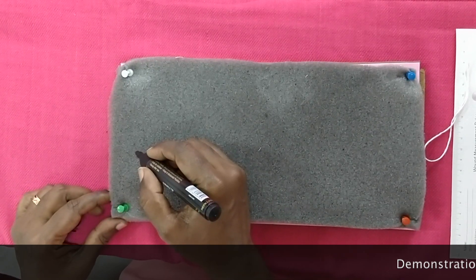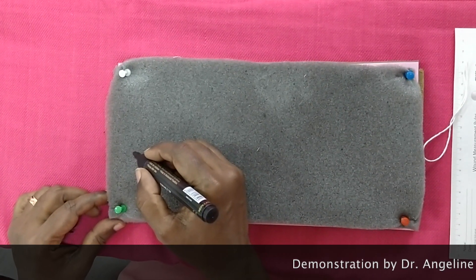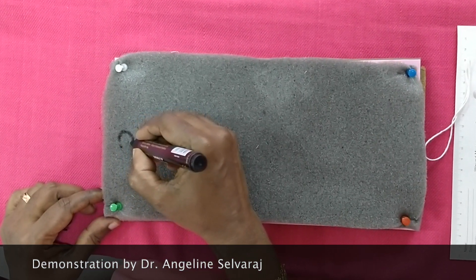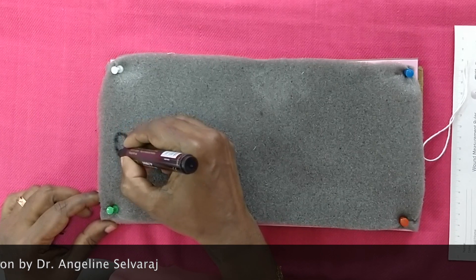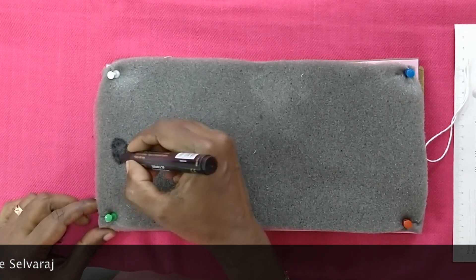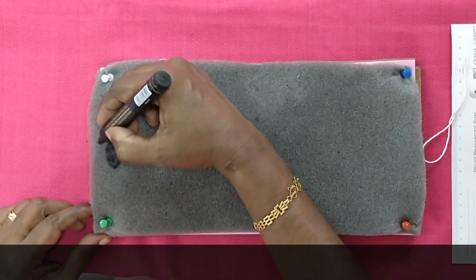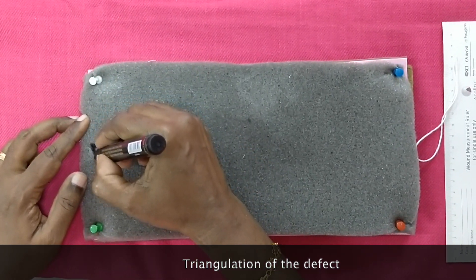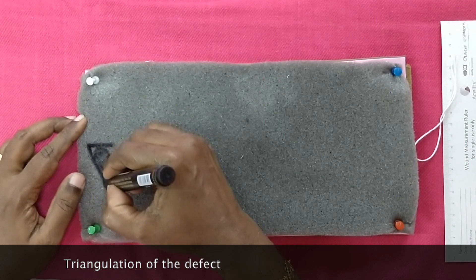We shall be seeing how the classical transposition flap as we have seen in the video is being done. First we will consider a defect, an irregular defect about 2 cm diameter. We shall have to first triangulate the defect, keeping in mind the principles that we have learned.